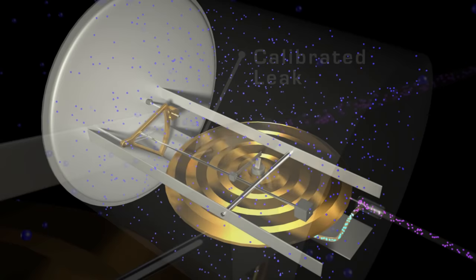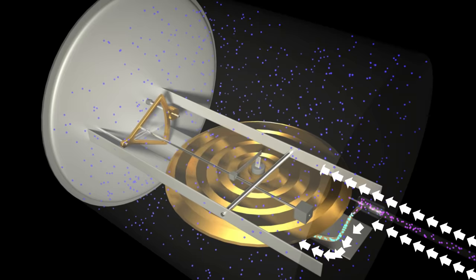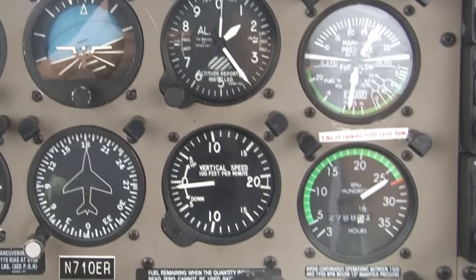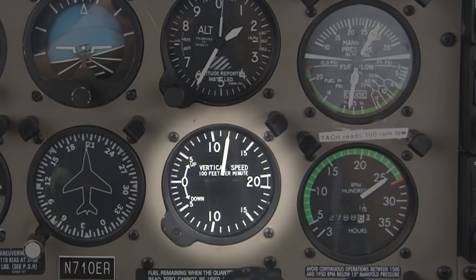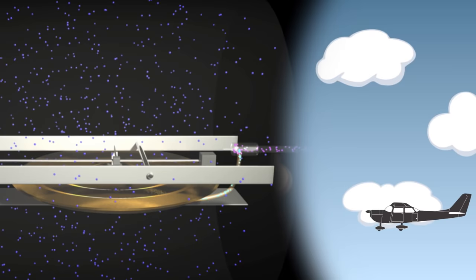When a plane climbs or descends, the diaphragm pressure will change instantly, but the case pressure changes slowly. This results in two different pressures. The difference in pressure allows the instrument to display the vertical speed. Be aware, however, that it takes a few seconds to read accurately, so anticipate a slight amount of lag. Here's an example of how it works.